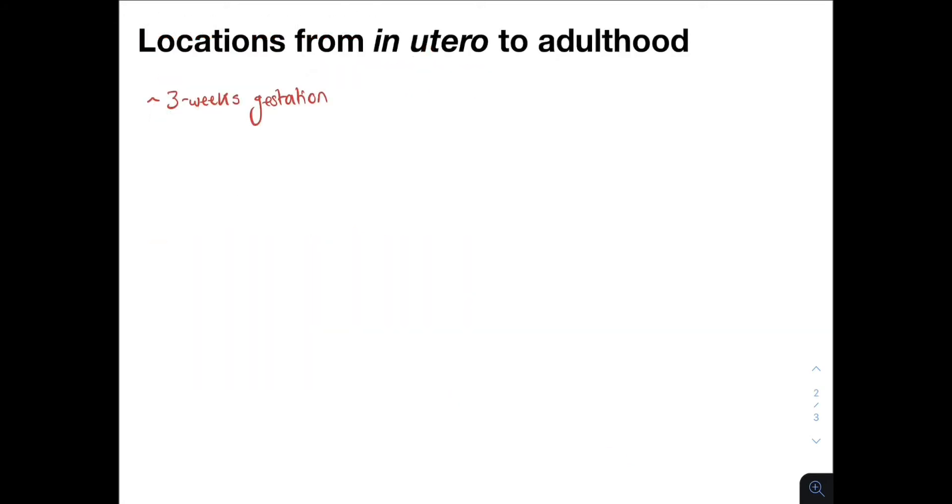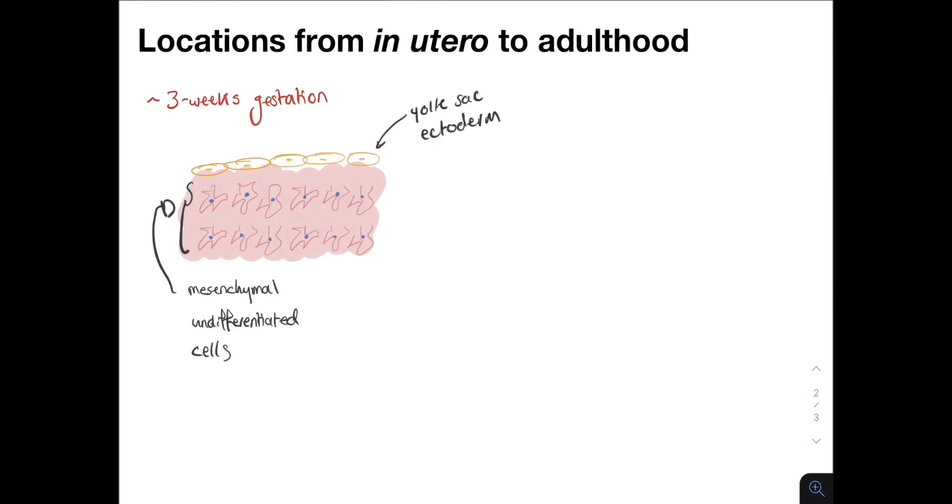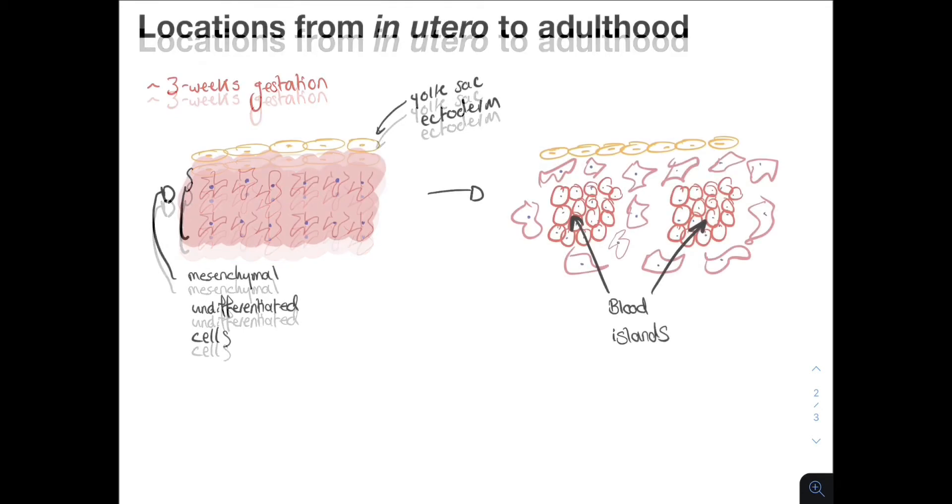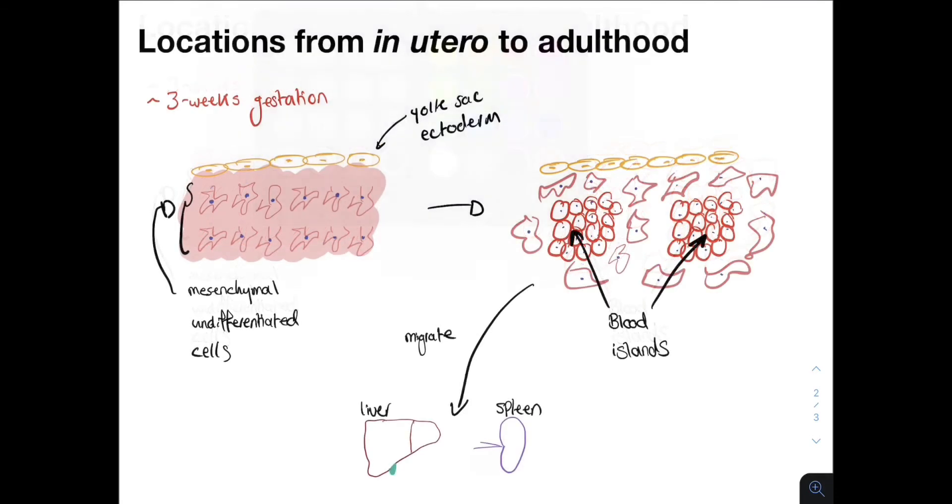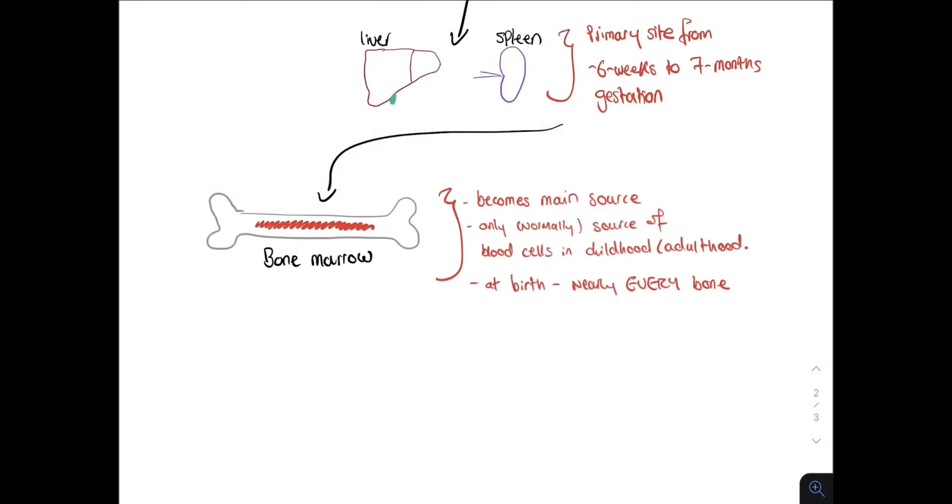Blood cell formation begins during the third week gestation. So what we have here is undifferentiated mesenchymal cells within the yolk sac. And around three weeks, these form blood islands that produce primitive blood cells. These migrate to the liver and spleen, which become the primary site for hematopoiesis from 6 weeks to 7 months gestation. By that time the bone marrow has matured and takes over, becoming the main source of blood cells. So now the bone marrow has become the primary site for hematopoiesis.